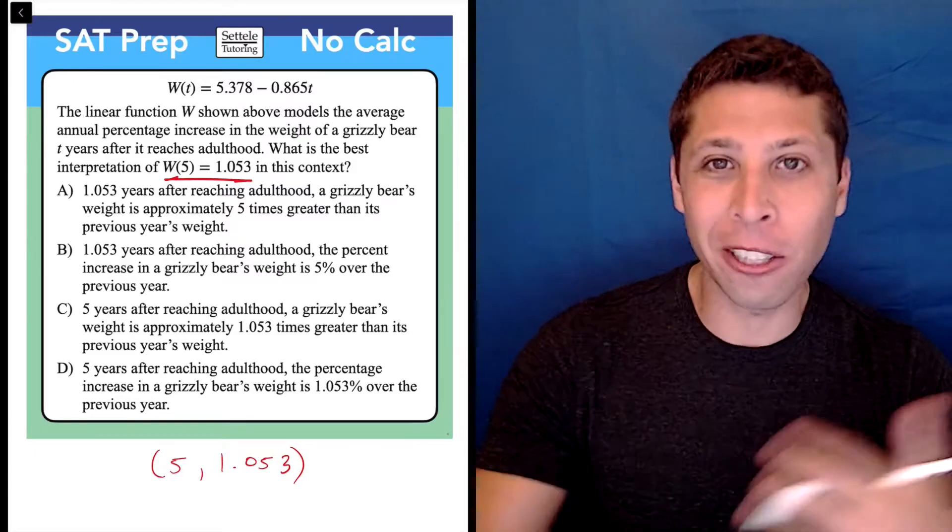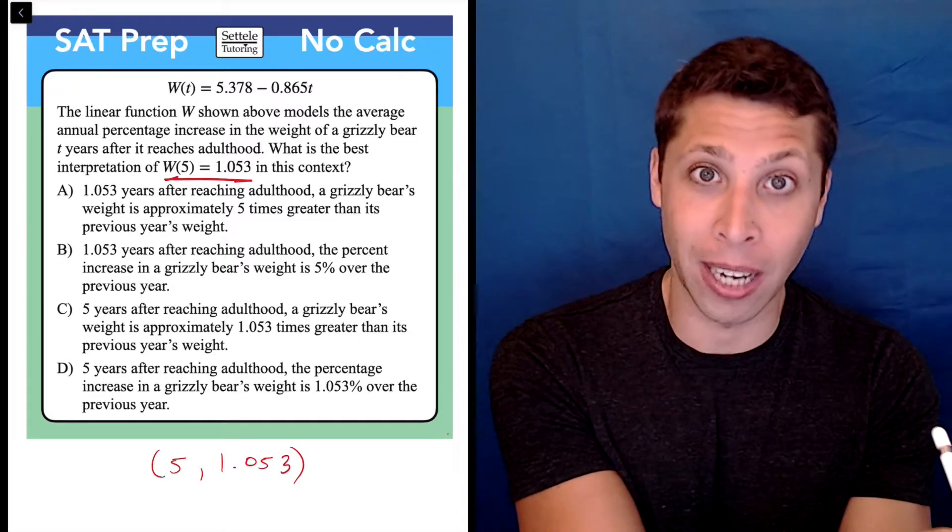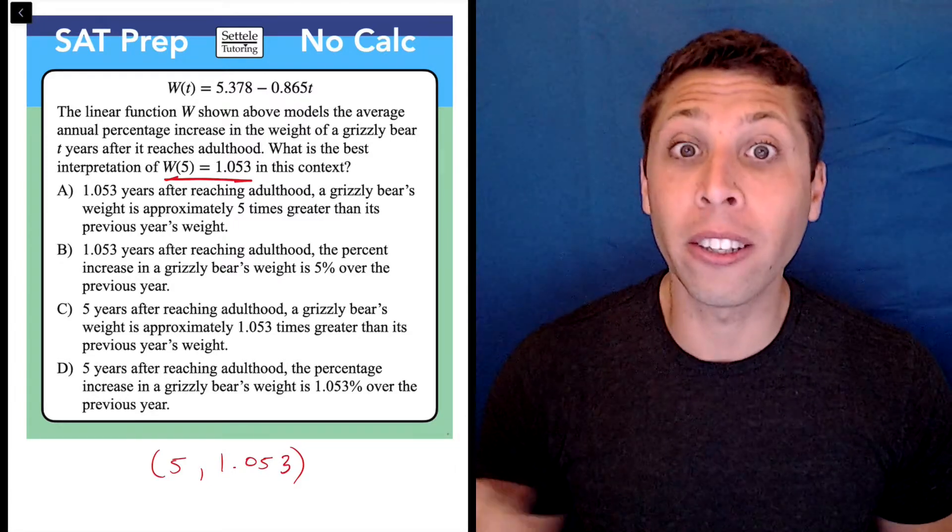Now when they're trying to turn it into a sentence on us, we can think about each component, right? Is the X in the right spot? Is the Y in the right spot? Some of these answer choices are clearly flipping that.